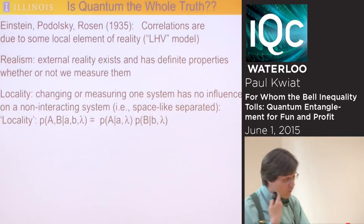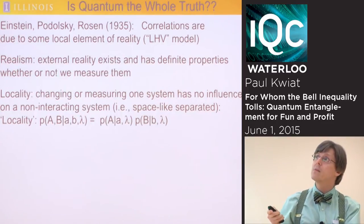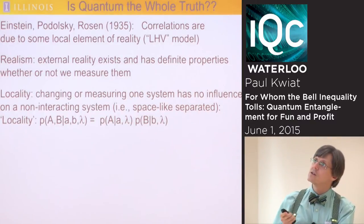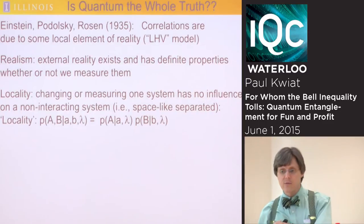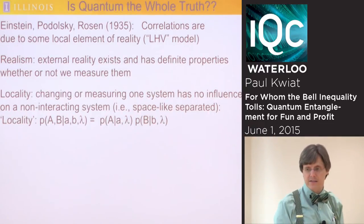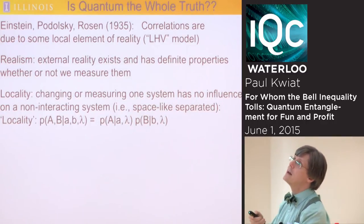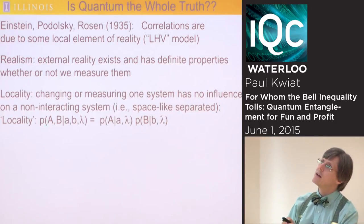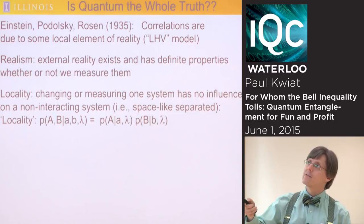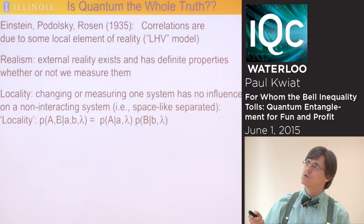EPR wanted to say these correlations are due to some extra element of reality beyond quantum mechanics — what we'd now call local hidden variables. They wanted nature to satisfy realism: there's some reality whether or not we are measuring it, and locality: making a measurement on one system shouldn't have a detectable influence on another non-interacting system. We can enforce locality experimentally by having space-like separation. Mathematically, locality says the joint probability P(A,B|a,b,λ) should factorize into something that only depends on system A times something that only depends on system B.